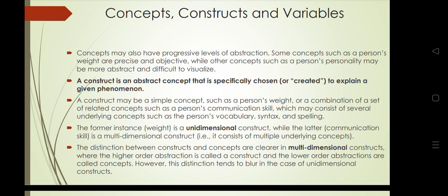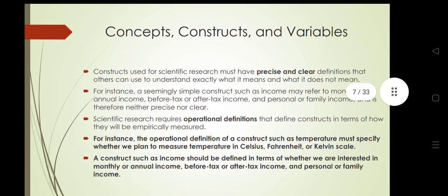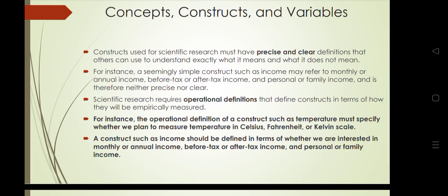Weight is a unidimensional construct, while communication skill is a multi-dimensional construct consisting of multiple concepts such as vocabulary, syntax, spelling, and orthography or semantics. The distinction between concept and construct is clear in multi-dimensional constructs — the higher-order abstraction is the construct and the lower-order abstraction is called the concept. However, this distinction tends to blur in unidimensional constructs.